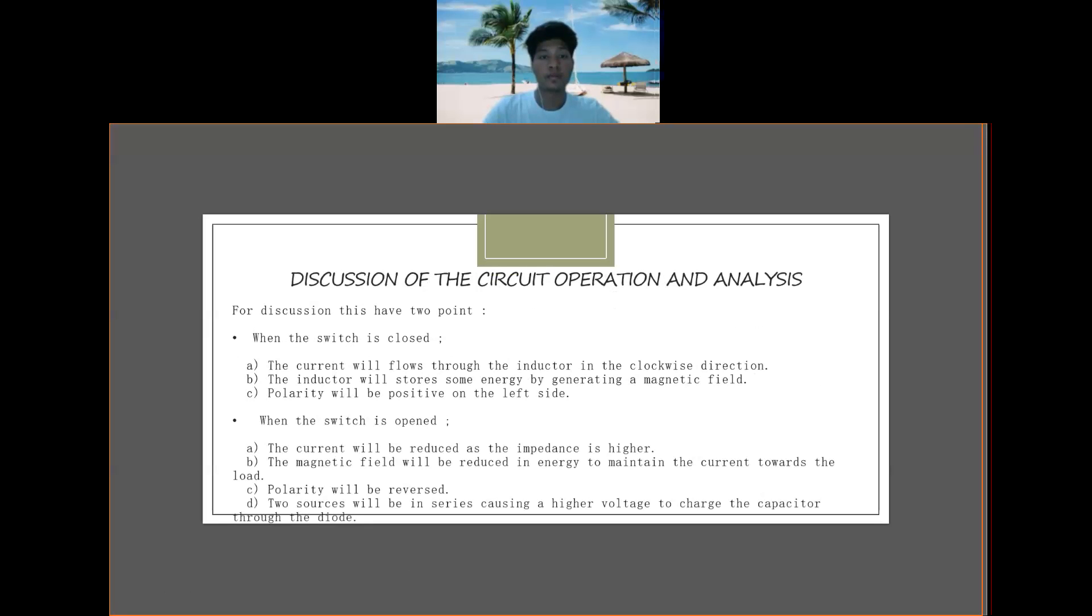The second is discussion of circuit operation and analysis. There are two points in this discussion: first one is when the switch is closed, second one when the switch is open. When the switch is closed, the current will flow through the inductor in the clockwise direction. Second, the inductor will store some energy by generating a magnetic field. Third, polarity will be positive on the left side, meaning the inductor is now positive.